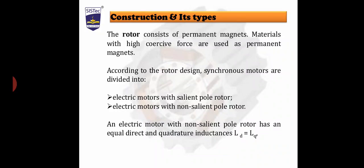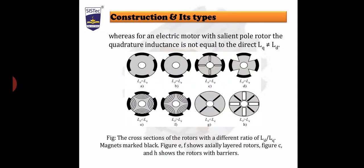In a salient pole synchronous machine there are two reactances, XD and XQ, because the air gap is not uniform. But in the case of non-salient pole construction, the air gap between the stator and rotor is uniform. An electrical motor with a non-salient pole rotor has equal direct and quadrature axis inductance as well as reactance — LD is equal to LQ, where LD is the direct axis inductance and LQ is the quadrature axis inductance. Whereas for a salient pole rotor, LQ is not equal to LD, or equivalently XQ is not equal to XD. You can see the diagram.